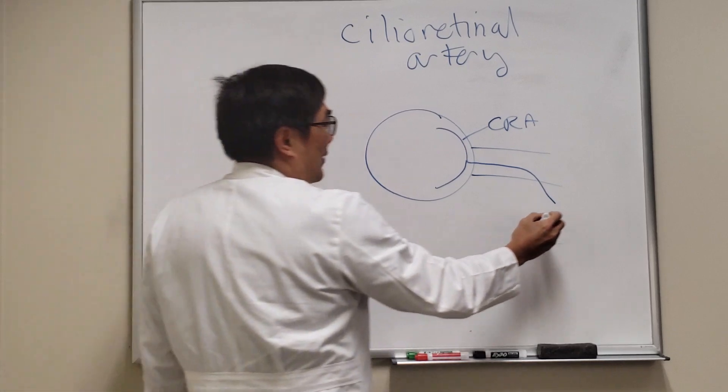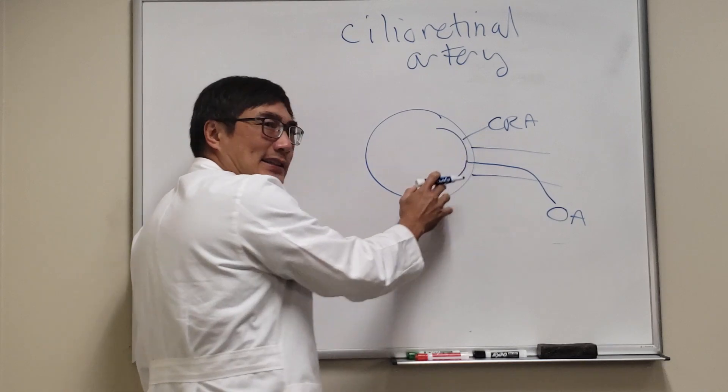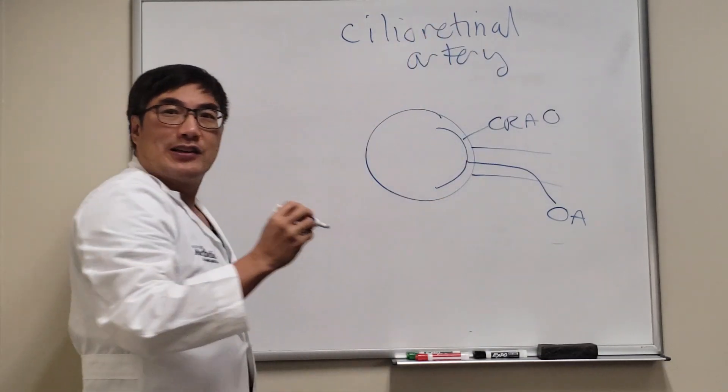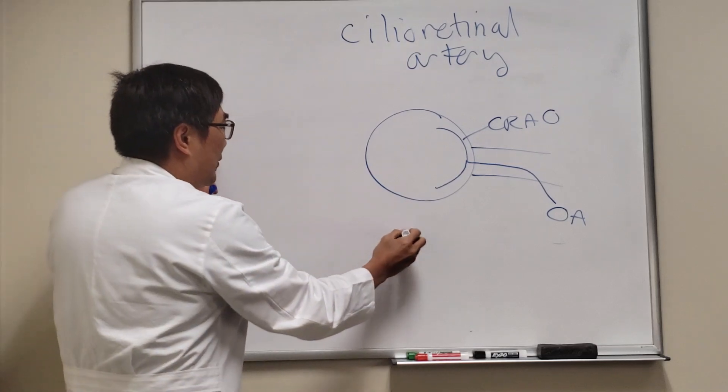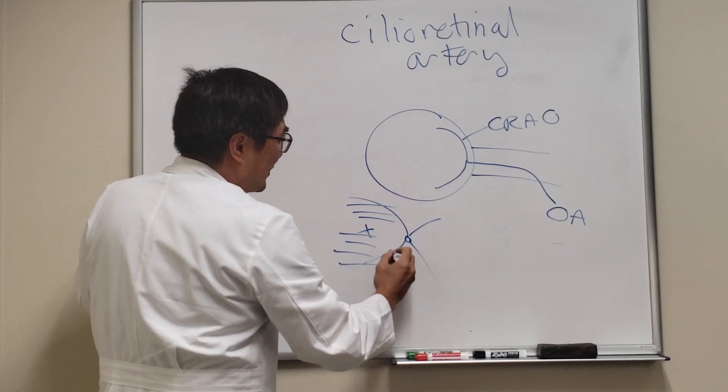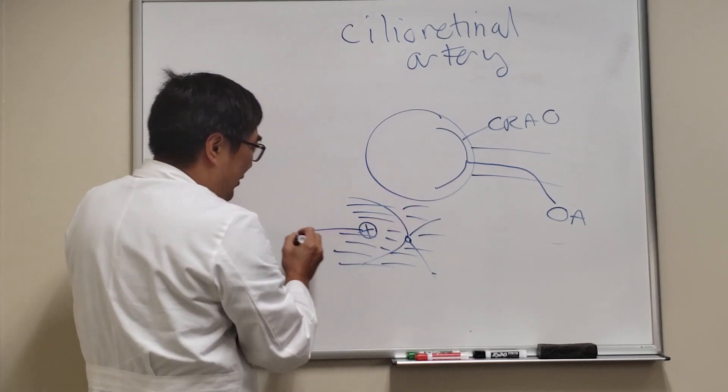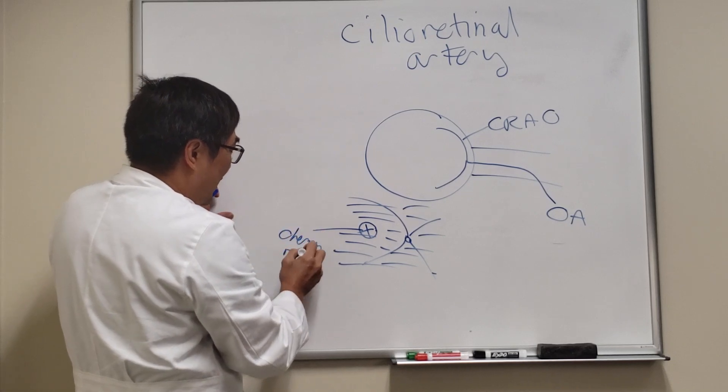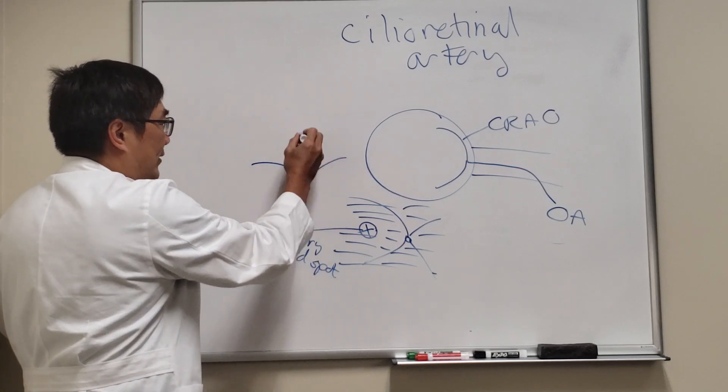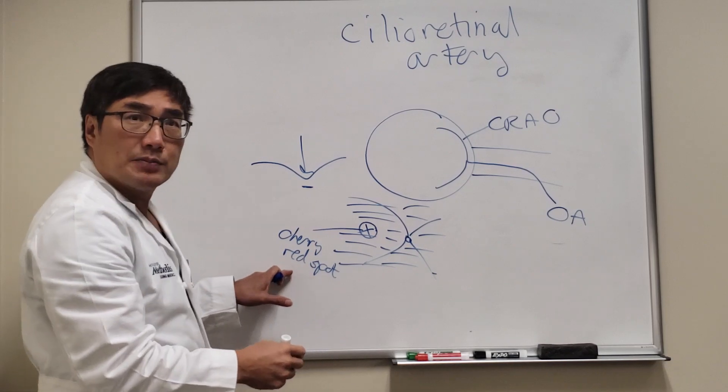It's a branch of the ophthalmic artery. When we have embolic disease or vasculitis like giant cell arteritis, it can produce a central retinal artery occlusion. In the eye, this looks like diffuse retinal opacity because the retina is ischemic, but we can see a cherry red spot in the center. This is where the thinnest part of the retina is, and because the retina is thinner there, we can see straight down into the choroid, which appears as that cherry red spot.